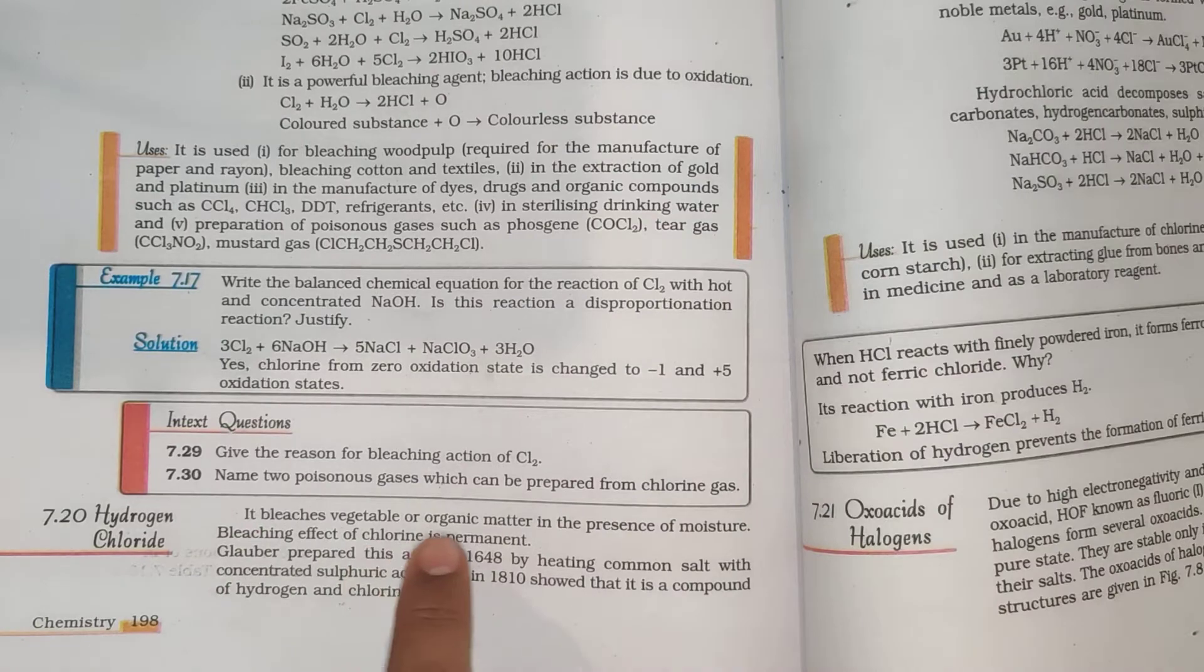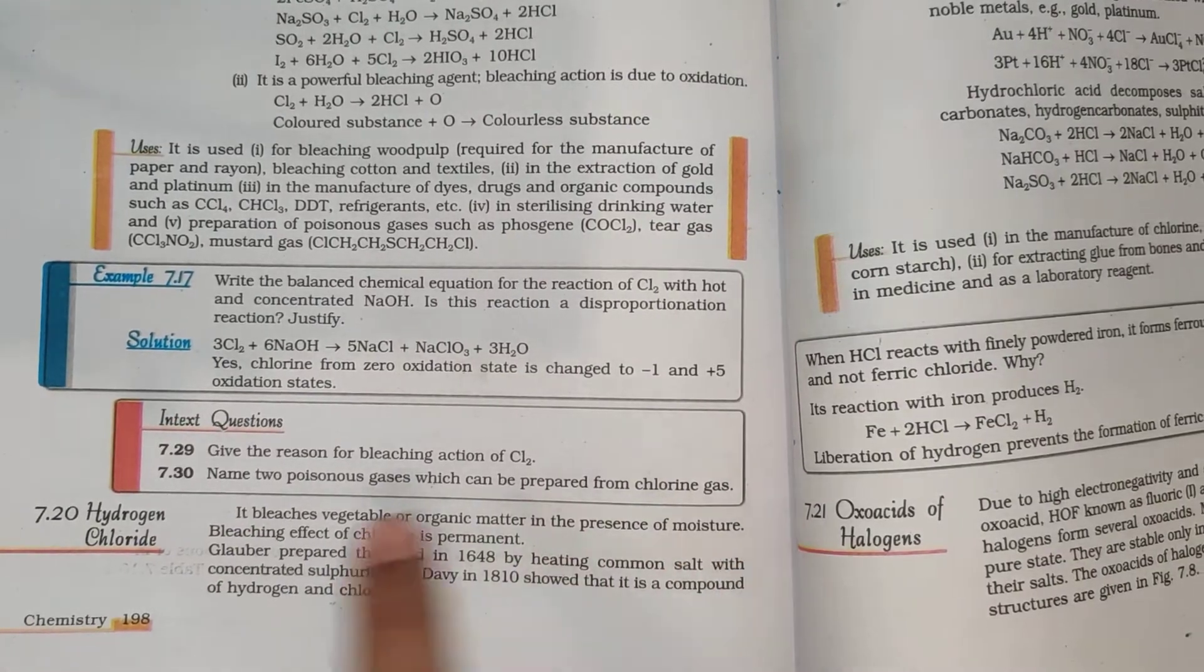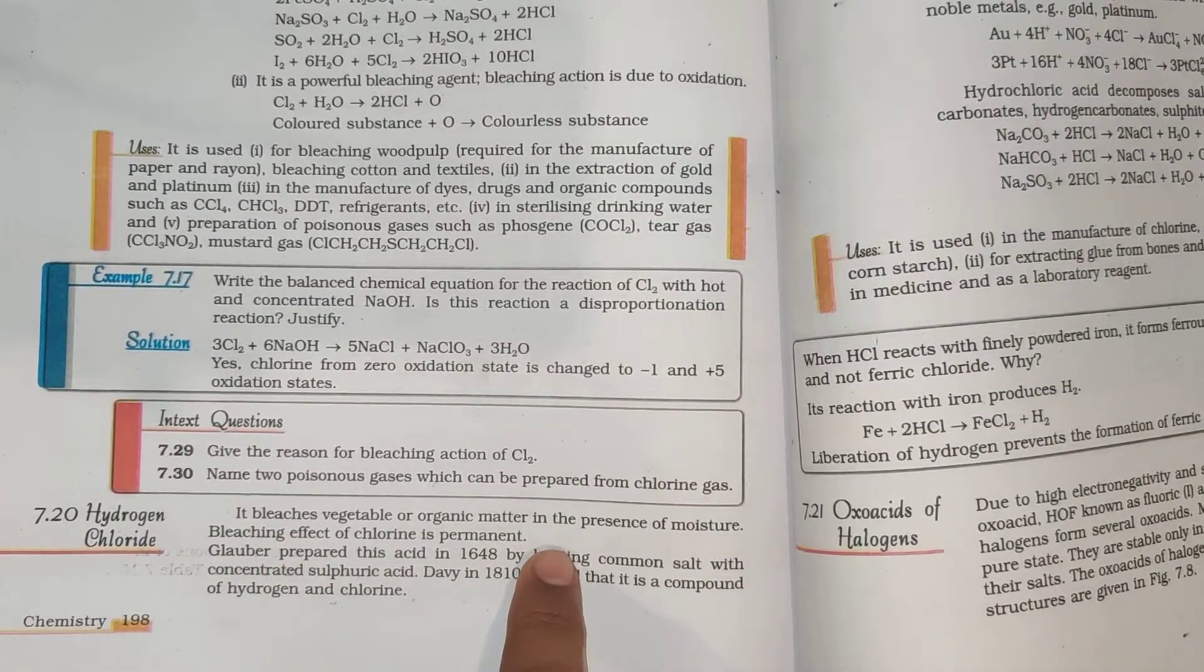Hydrogen chloride bleaches vegetable or organic matter in the presence of moisture. Bleaching effect of chlorine is permanent.